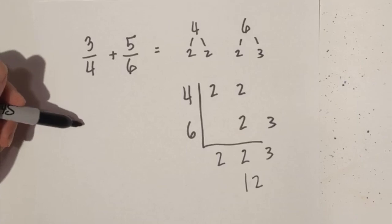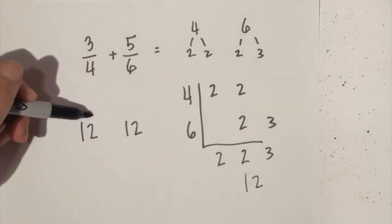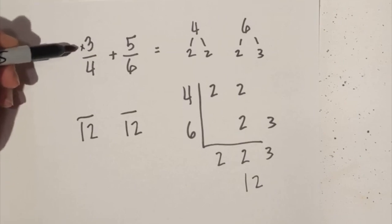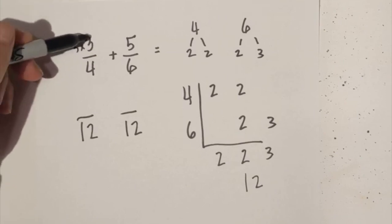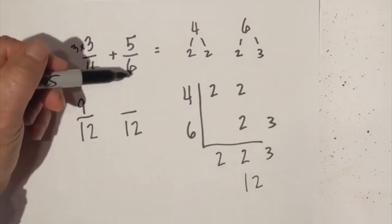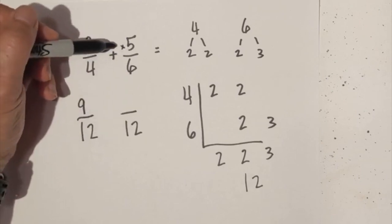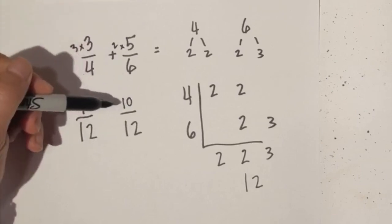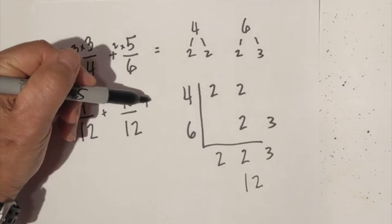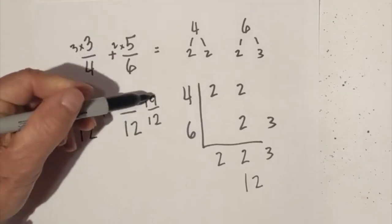Now I'm going to rewrite the two fractions. Four goes into twelve three times, so three times three is nine. And six goes into twelve two times, so five times two is ten. I just add them now, and that's 19 over 12.